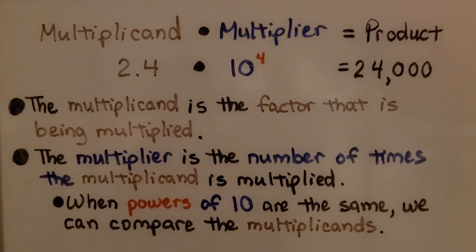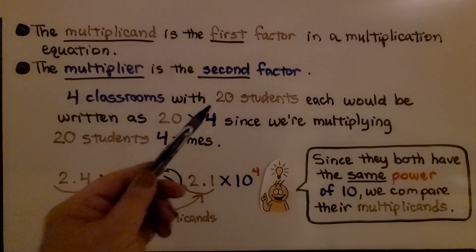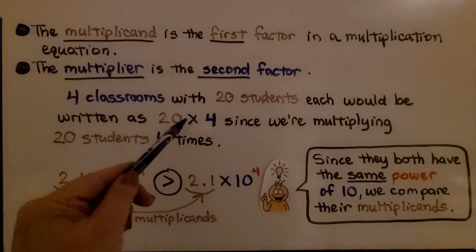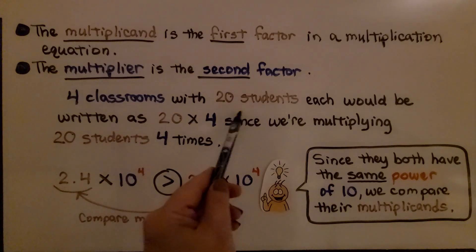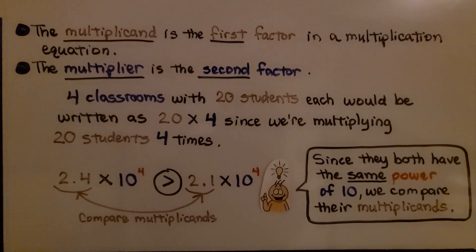When powers of 10 are the same, we can compare the multiplicands. The multiplicand is the first factor in a multiplication equation; the multiplier is the second factor. For example, 4 classrooms with 20 students each would be written as 20 times 4, since we're multiplying 20 students 4 times.